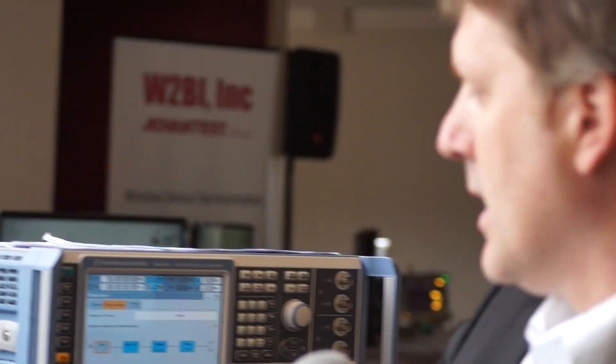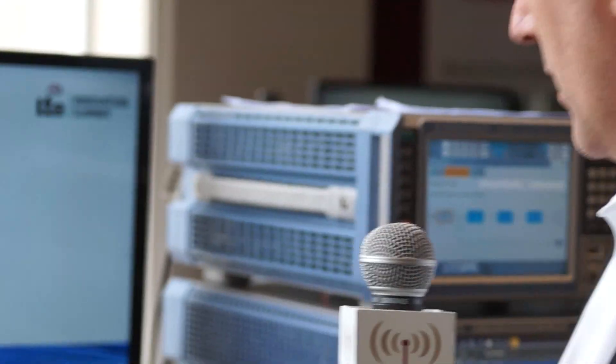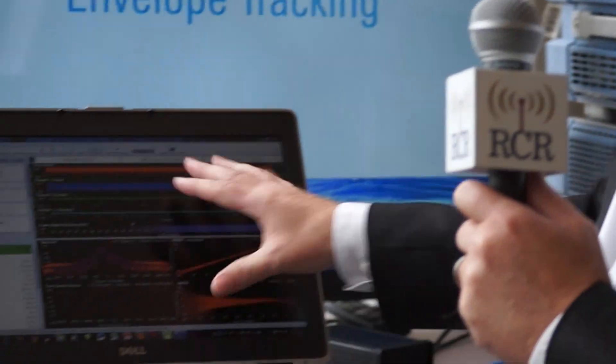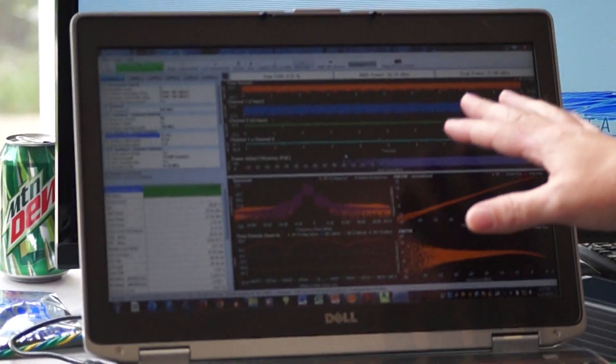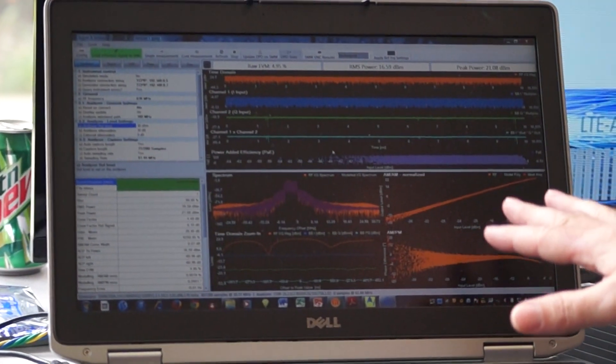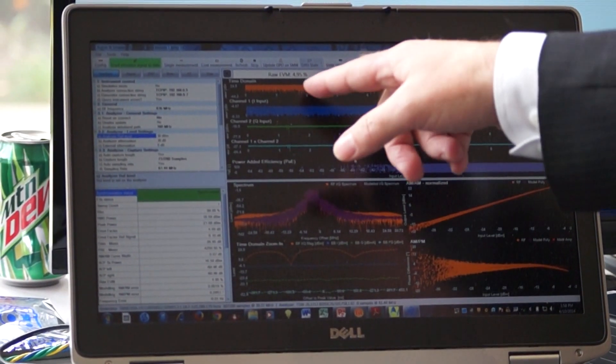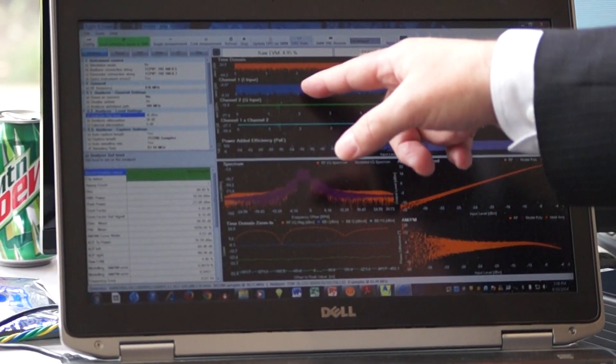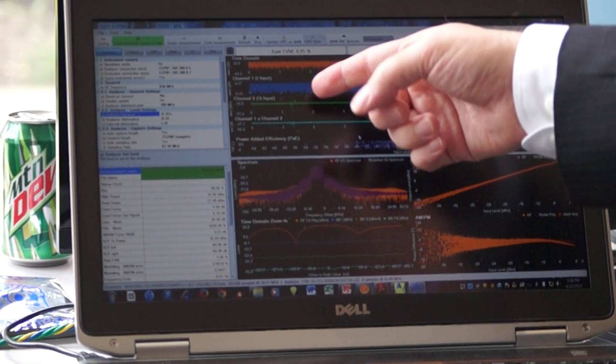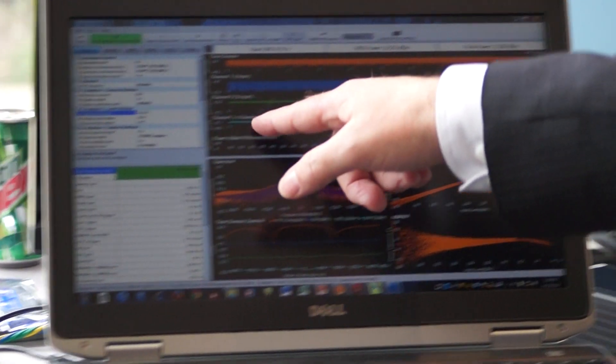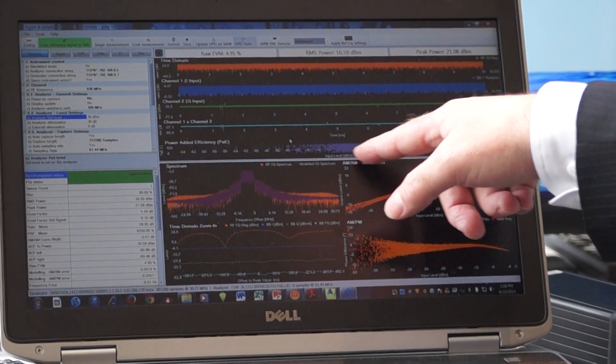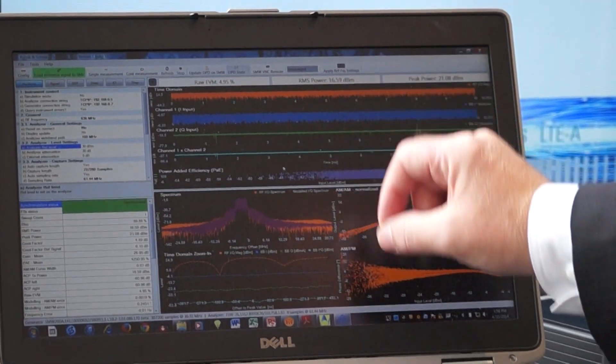All of this value is coming out through IQ outputs out of the signal analyzer into this software, and this software measures basically everything you need to measure. We've got a time domain shot, we've got the I input, the Q input, which would be the voltage and the current, and then we can simply calculate the power and the instantaneous power added efficiency directly here.